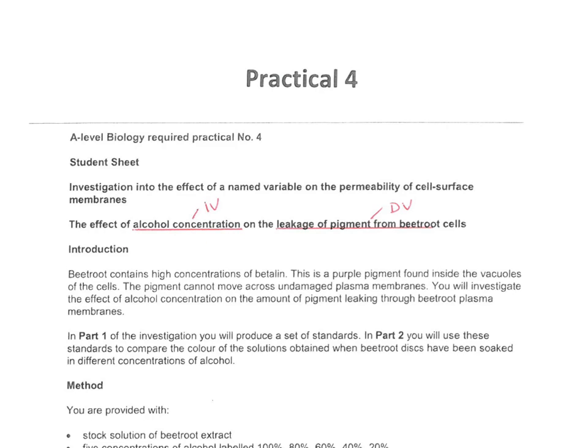So alcohol concentration is the independent variable, and the leakage of pigment from the beetroot cell is the dependent variable. In this practical, there are two different ways that you can measure the leakage of pigment — you can do it qualitatively, or you can do it quantitatively, and we'll go through what they are in a minute.